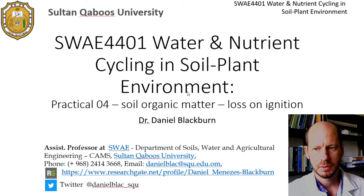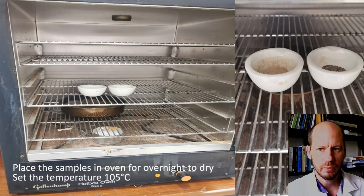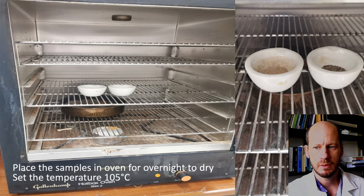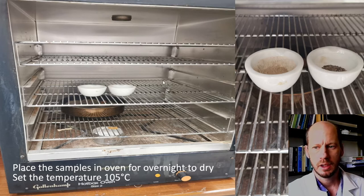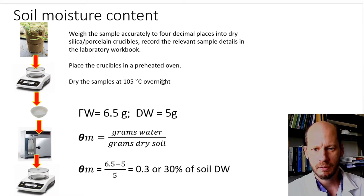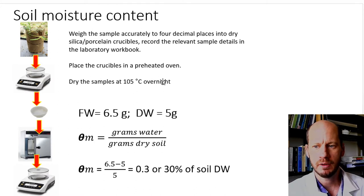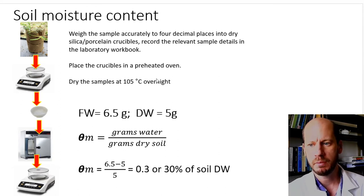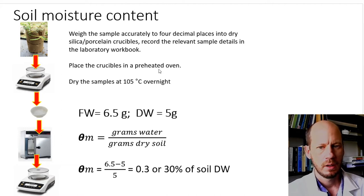First of all, we have to dry the soil in the oven because we cannot express loss on ignition on a wet basis — we need to express this on a dry basis. We leave the soils overnight in the oven at 105°C and the next day we can proceed and burn the samples in a furnace. When you dry the soils, you can calculate the moisture content by dividing the grams of water in the soil sample by the dry weight of the soil. If you want to transform to volume basis, you have to multiply that by the bulk density.